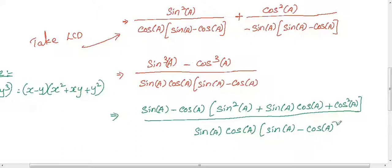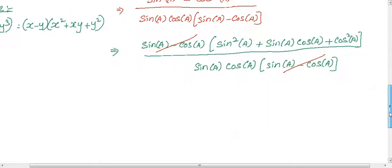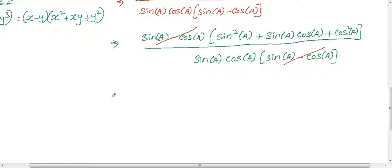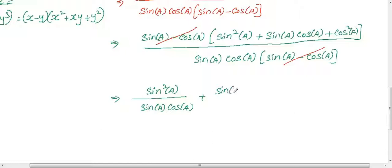Now we have sin a minus cos a in both the numerator and denominator, so just cancel that out. We get sin squared a plus sin a cos a plus cos squared a divided by sin a cos a. If we divide each term, we get sin squared a divided by sin a cos a, plus sin a cos a divided by sin a cos a, plus cos squared a divided by sin a cos a.